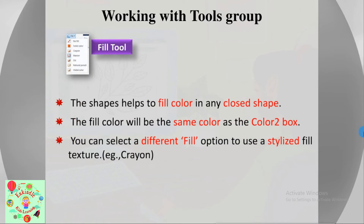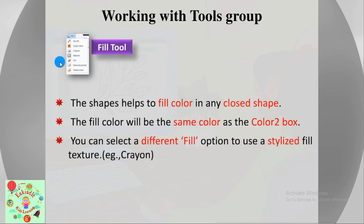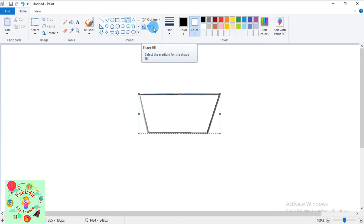The second option is the fill tool. This tool helps to fill color in any closed shape. The fill color will be the same as the Color 2 box. You can select different fill options to use a stylized fill texture — for example, crayon. When you click the drop-down arrow next to the fill tool, you'll find solid color, crayon, marker, oil, natural pencil, and watercolor options.